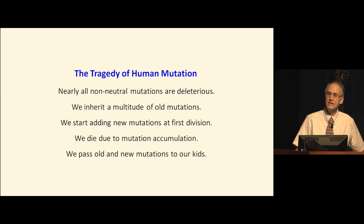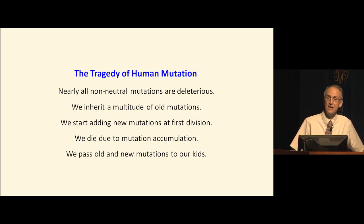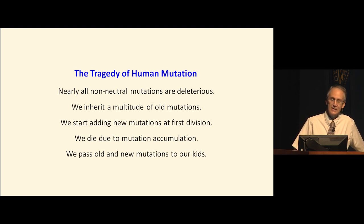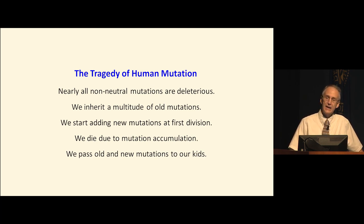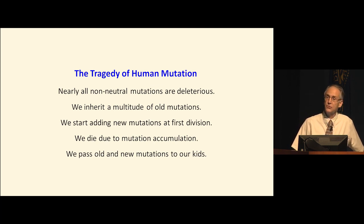Human mutation is catastrophic. Arguably it's one of the primary causes of death and suffering. We know that nearly all non-neutral mutations are deleterious. We inherit a multitude of mutations from our ancestors and our parents. From the very first division of our zygote, we begin to add new mutations to that genetic load. We accumulate mutations at the rate of approximately three new mutations every cell division throughout our lifetime. That growing genetic load is what causes aging and limits the upper life limit of our race.